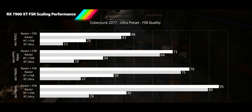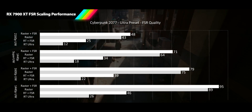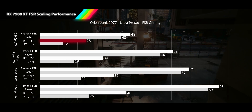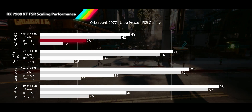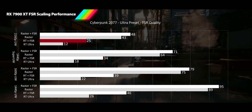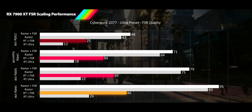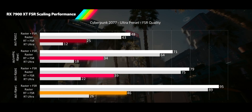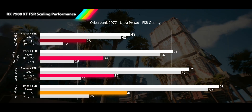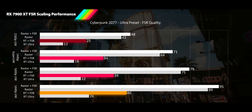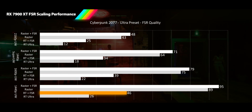When we turn on the extensive ray tracing features this game offers, the story does a 180 and we now see the best scaling yet, with 4K ultrawide delivering an insane 99% performance improvement, and our lower resolutions providing 85%, 80%, and 76% improvements for 1440p super ultrawide, 1600p, and 1440p ultrawide respectively. Even with these crazy increases, ray tracing performance is too low on all but 1440p to consider playing with it all turned on.